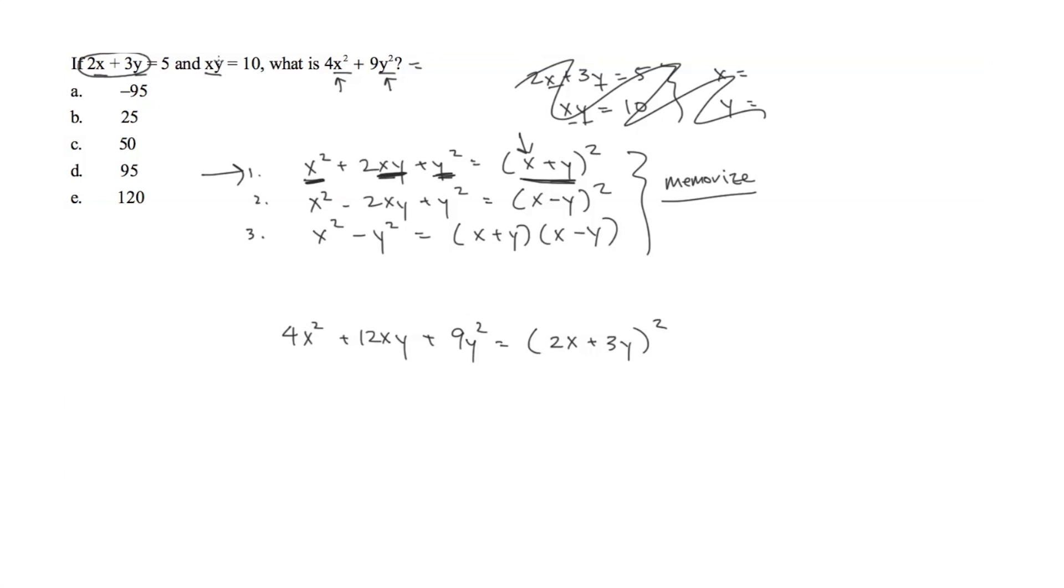Next, they give us that xy is equal to 10. So I'm going to plug that in for this xy. And they also give us that 2x plus 3y is equal to 5. So I'm going to plug that in there as well. They're asking us to figure out what 4x squared plus 9y squared equals, so we don't have values for that.